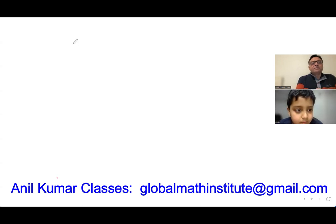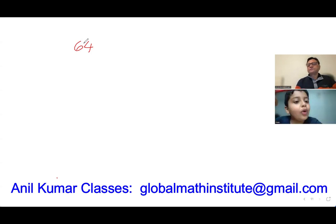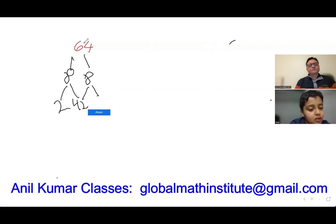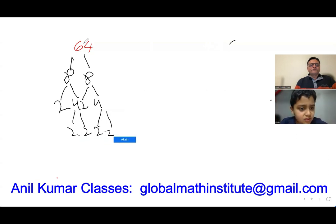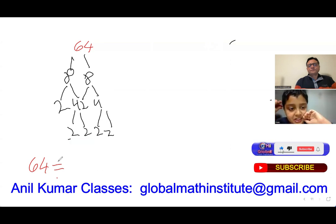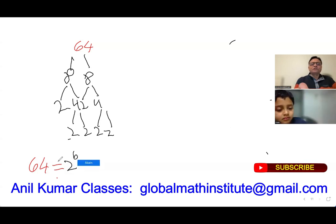Let's take a slightly bigger number: 64. How will you do 64? 8 times 8. So 64 equals 2 to the power of 6. You understand powers as well.